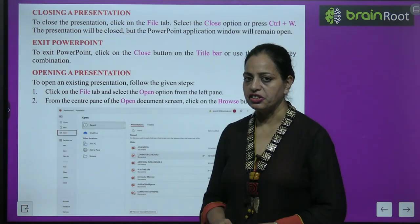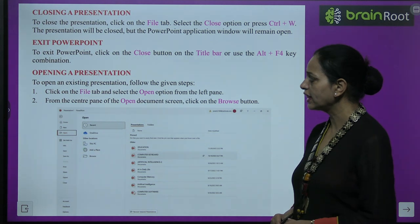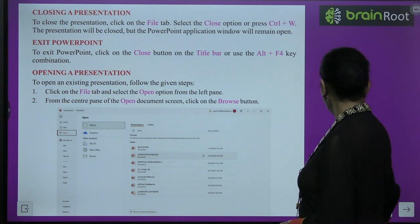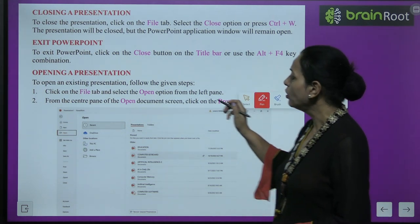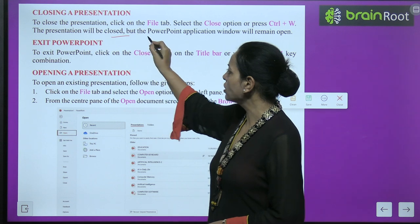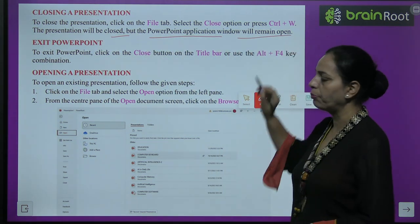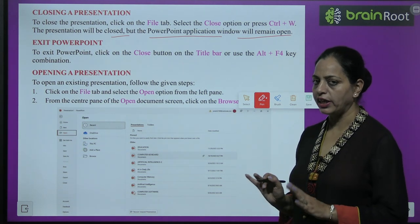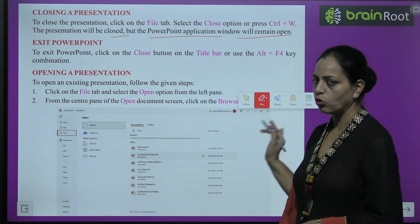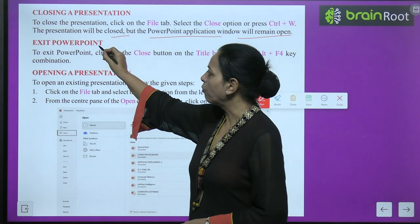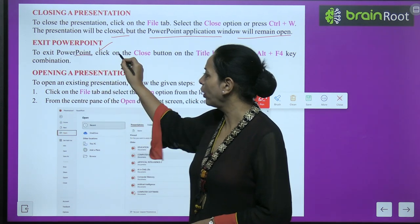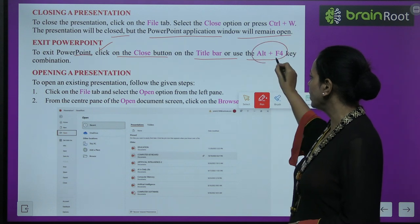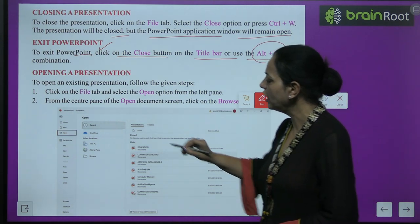To close a presentation, click on the File tab and select the Close option, or press Ctrl+W. The presentation will be closed but the PowerPoint application window will remain open. To exit PowerPoint completely, click on the Close button on the title bar or use the Alt+F4 key combination.